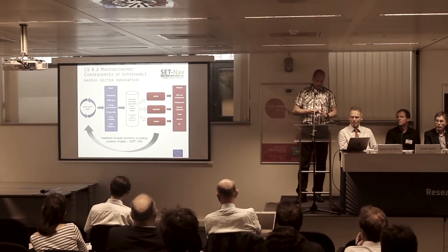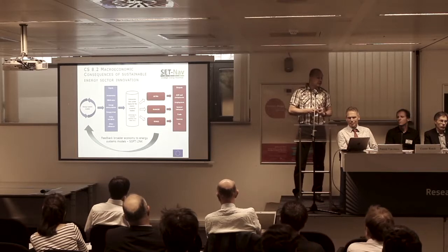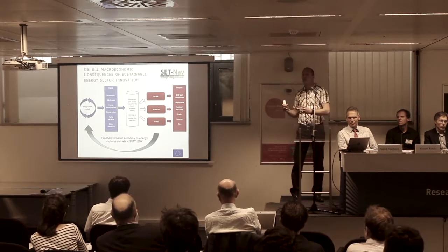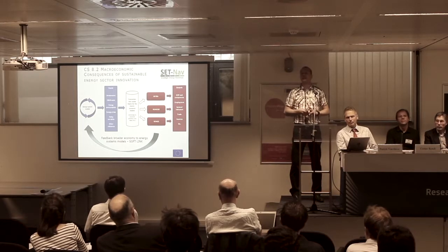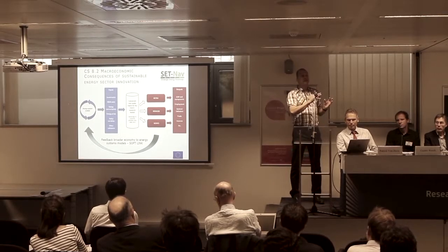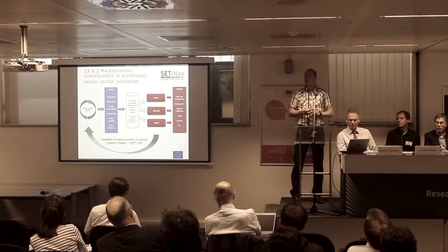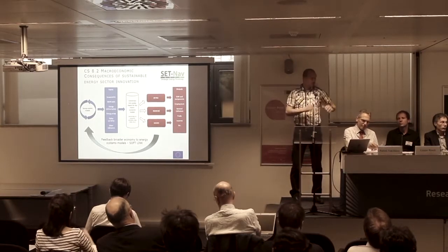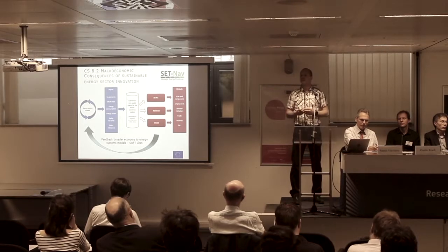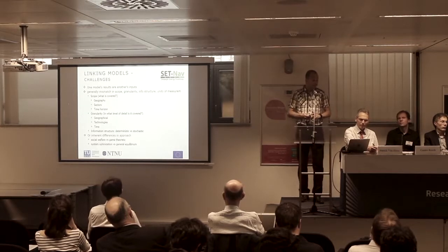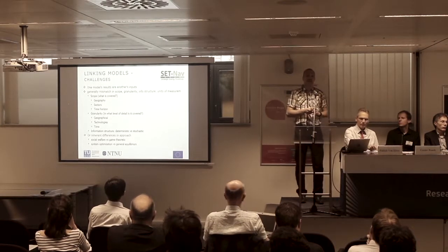The second case study briefly illustrated here looks at macroeconomic consequences. A set of models first examines the energy system in detail, and the things that happen there — production levels, demand, investments — need to be accounted for in the broader macroeconomic models. So we need to go from physical units to monetary units. The macroeconomic models then do their analysis, and in this case a soft link brings feedback: if the macroeconomic impact shows that the money for planned energy investment is simply not available, one of the starting points must be adjusted.